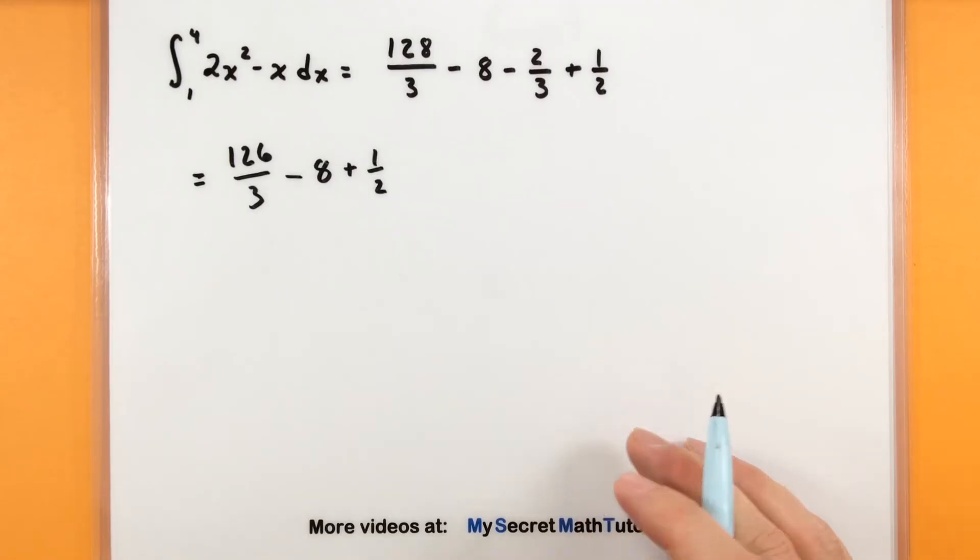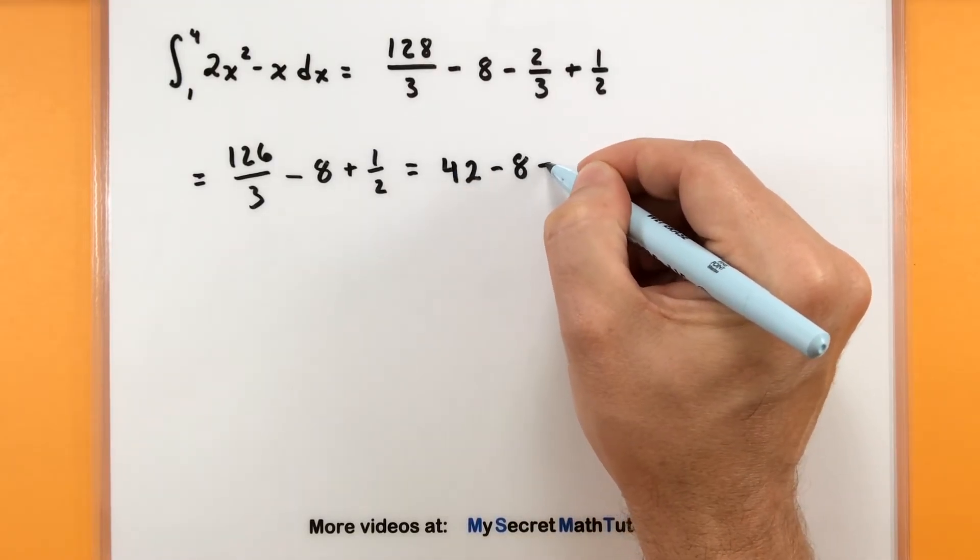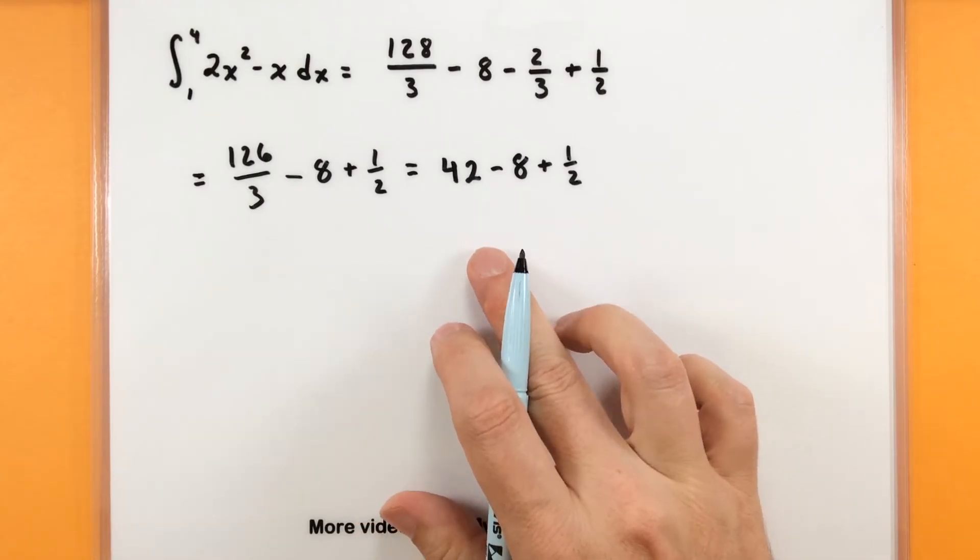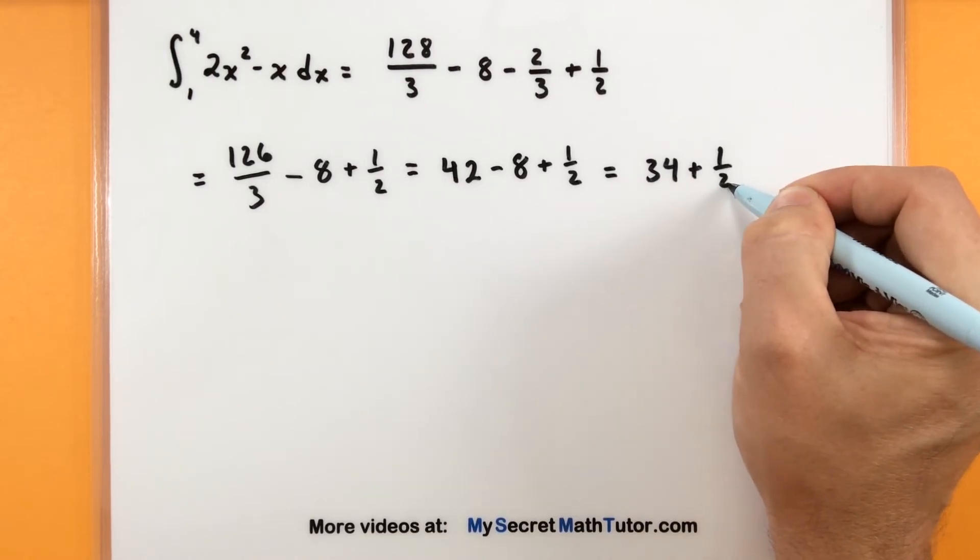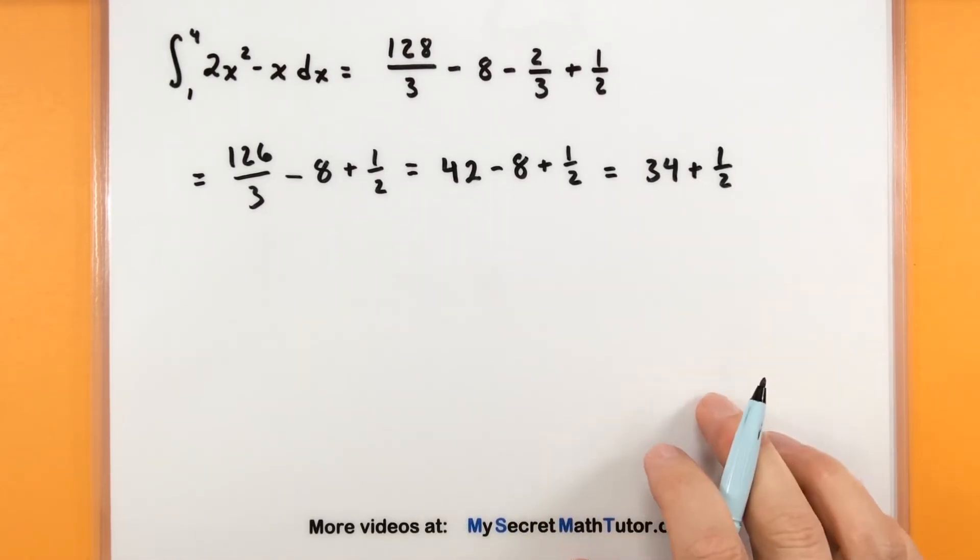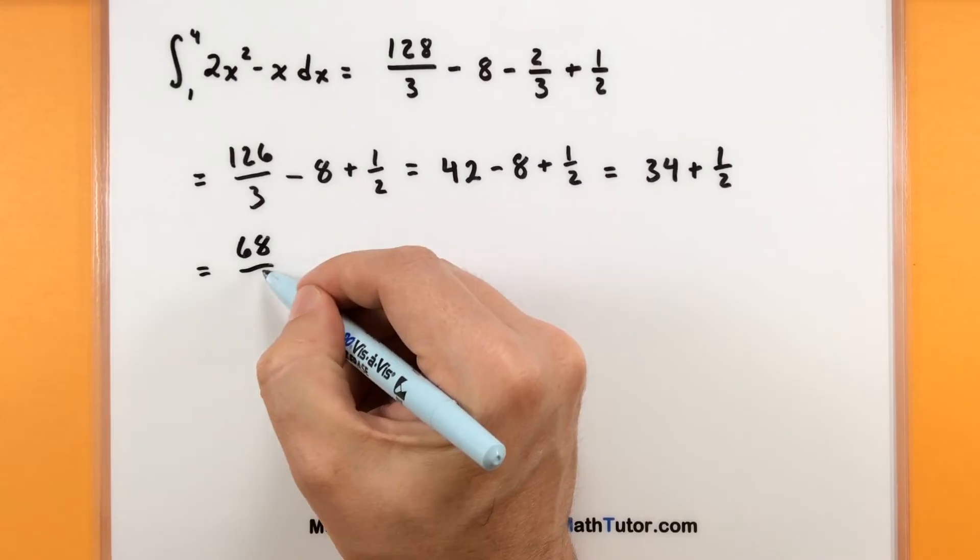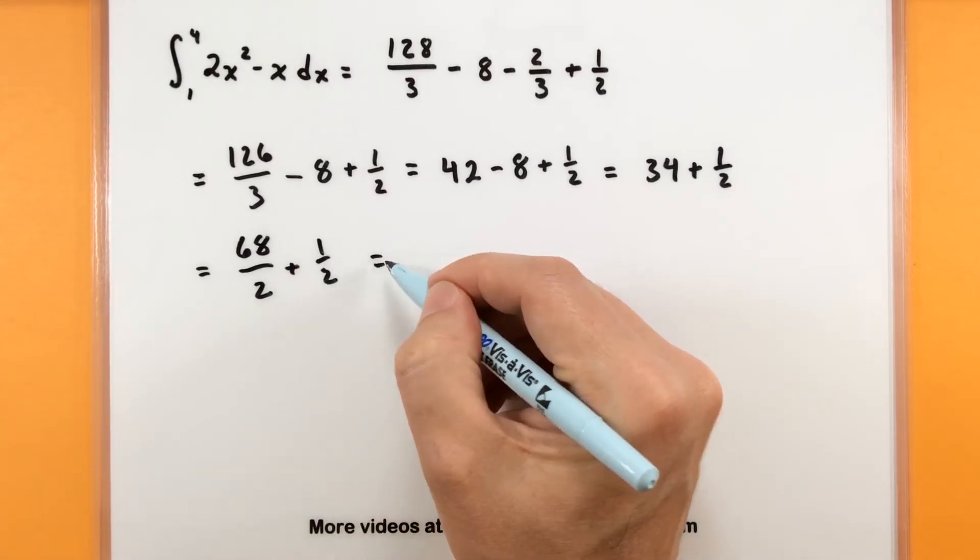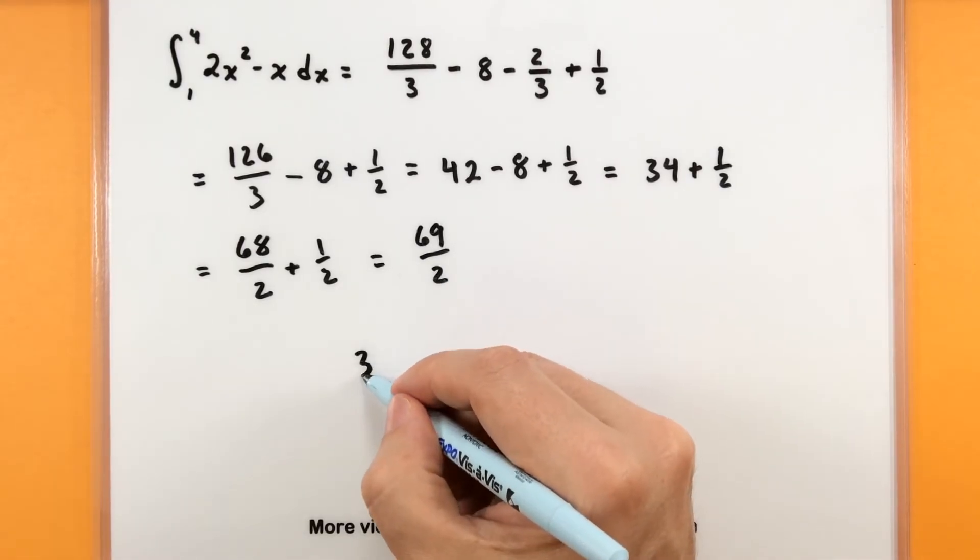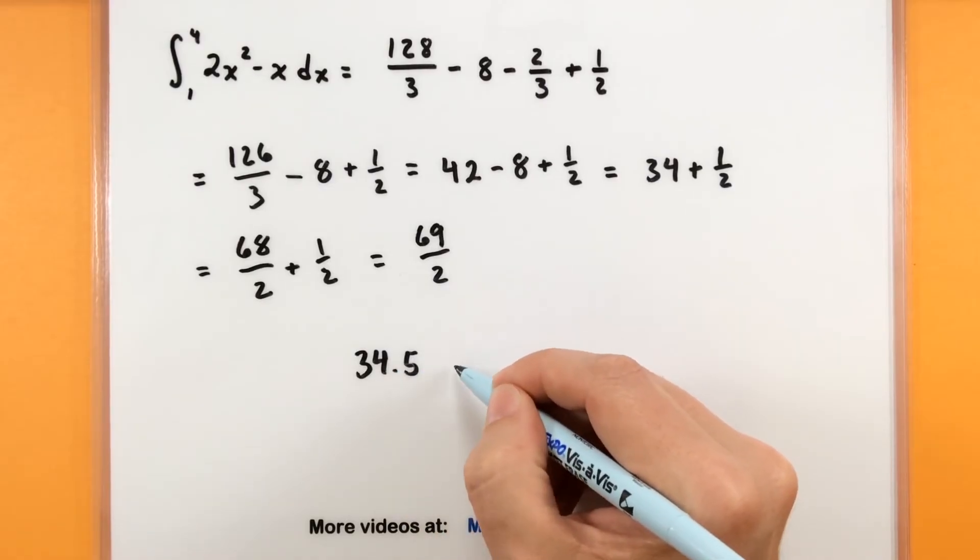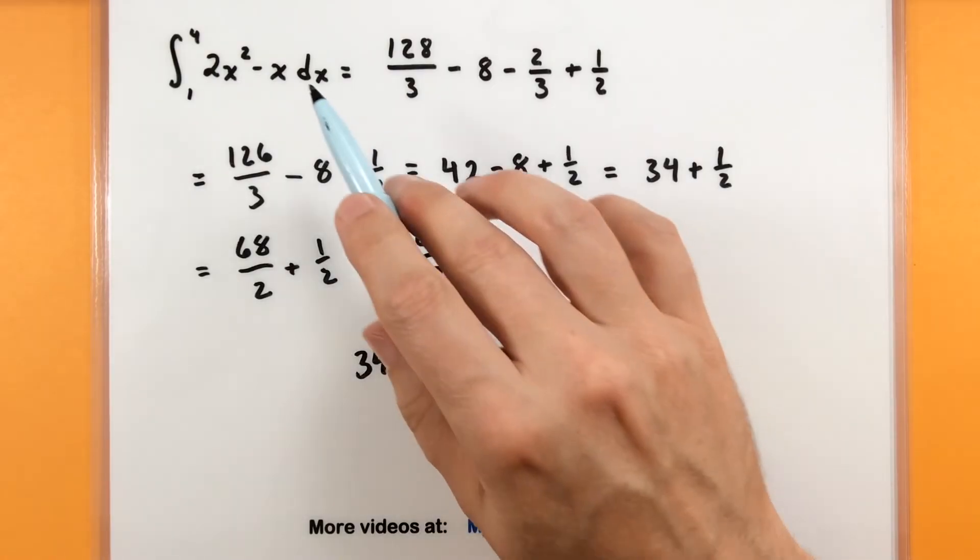126 divided by 3 simplifies nicely, that turns into 42. So now I have 42 minus 8, we can simplify that into 34. So I'm really looking at 34 plus 1 half. If we want, we can combine those by finding a common denominator. So that'd be 68 over 2 plus 1 half. We can call this 69 over 2. There's really a couple of ways you could write your answer. You could leave it as 34 and a half, or write it as 69 over 2. Either way, that would give us the value of our definite integral.